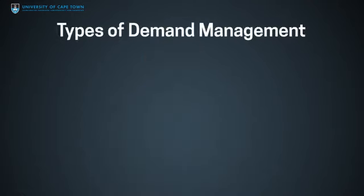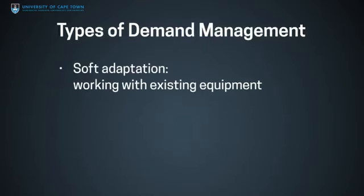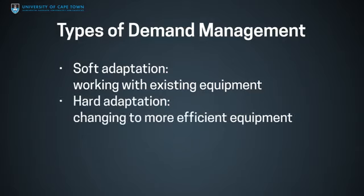There are two types of demand management options. The first is the soft option, which is around working with existing equipment but using less through changes in behavior. The second is more of the engineering or hard option, which is changing to more efficient equipment in the water use system.